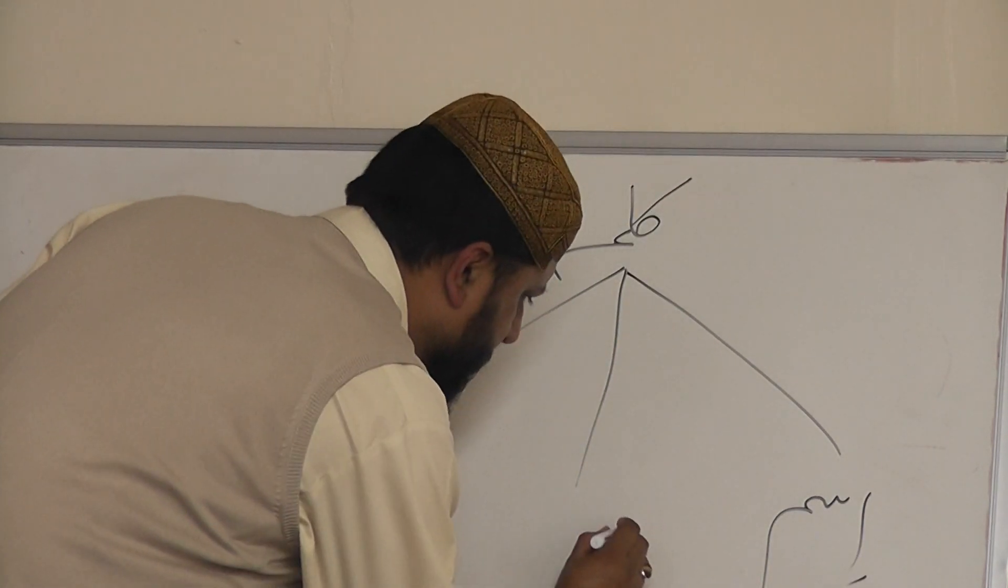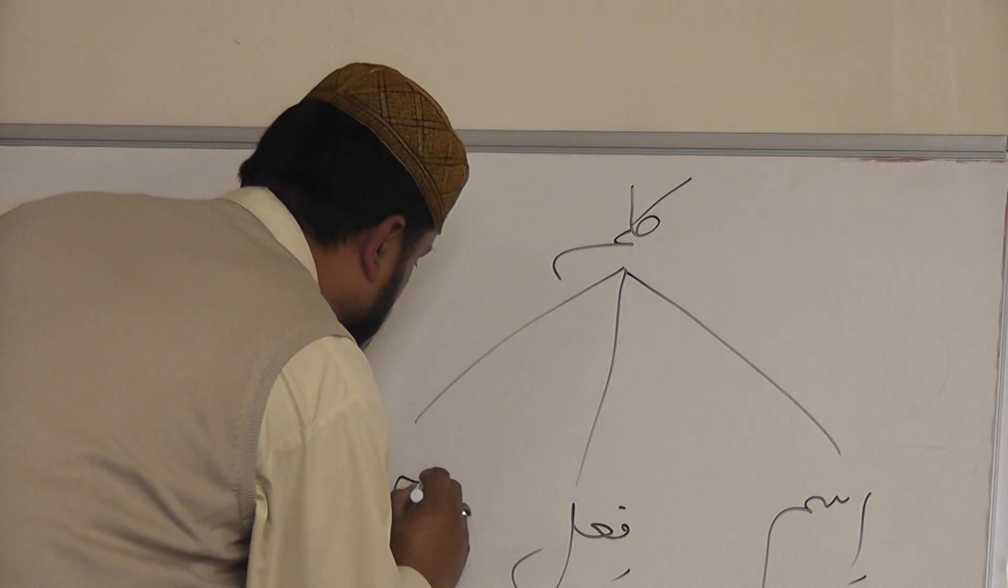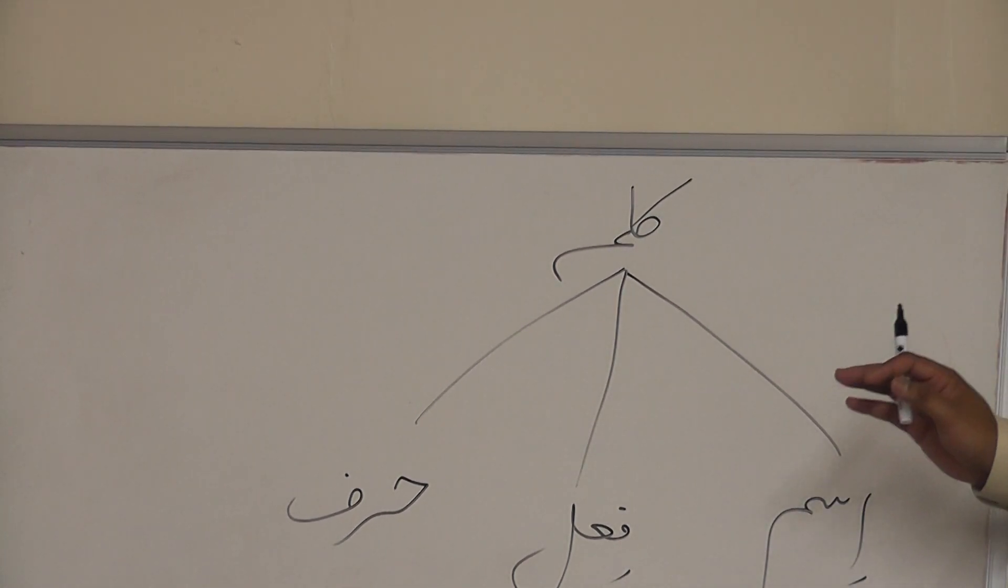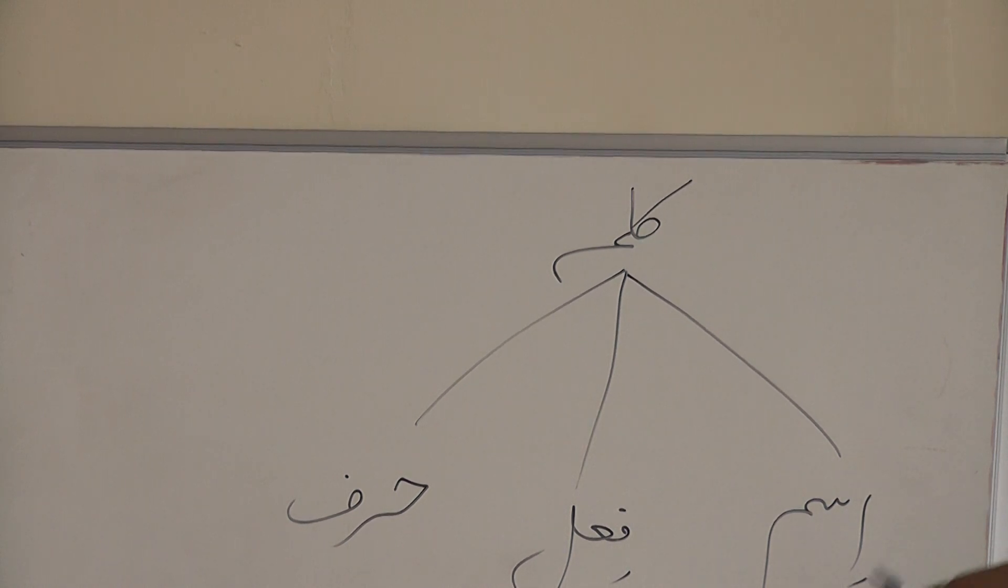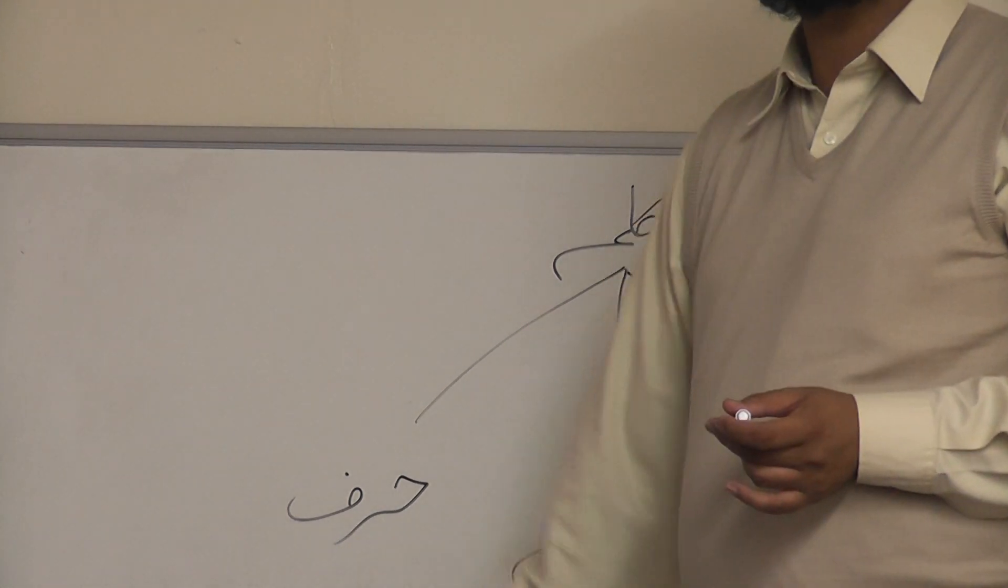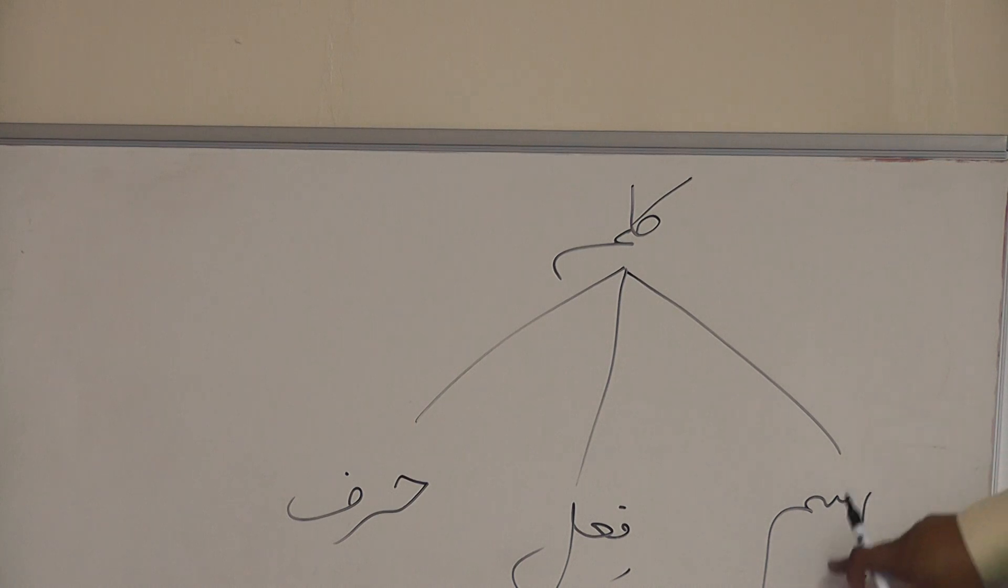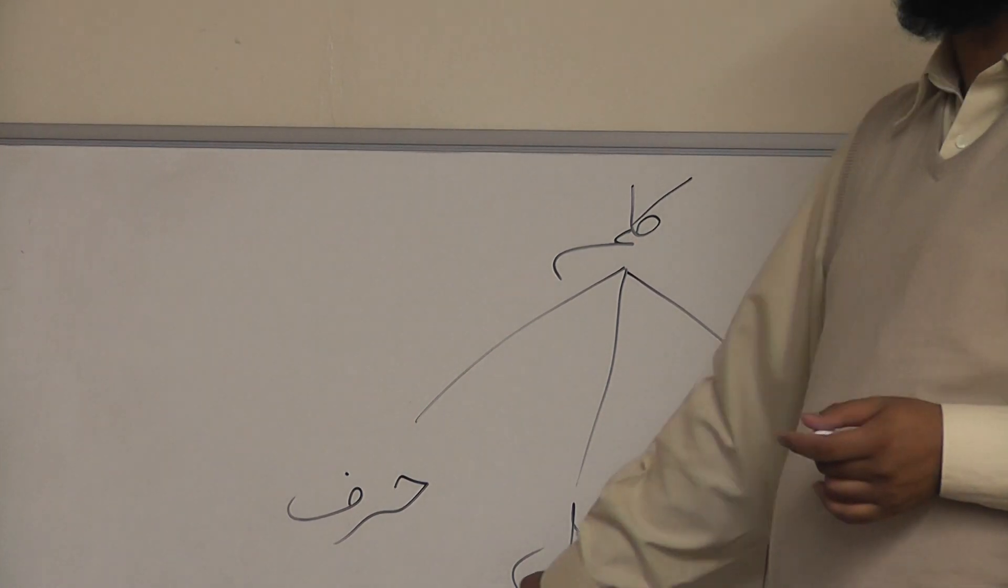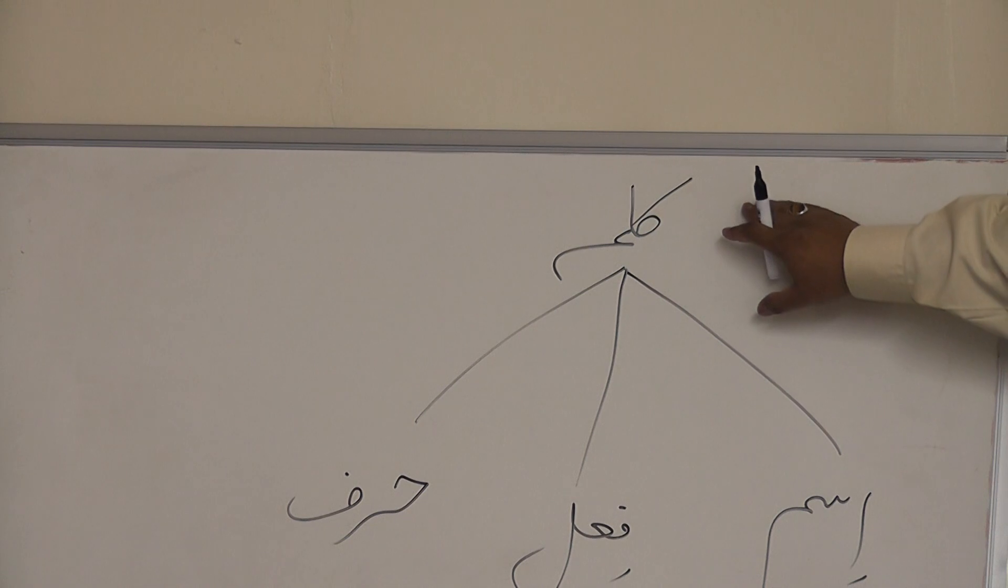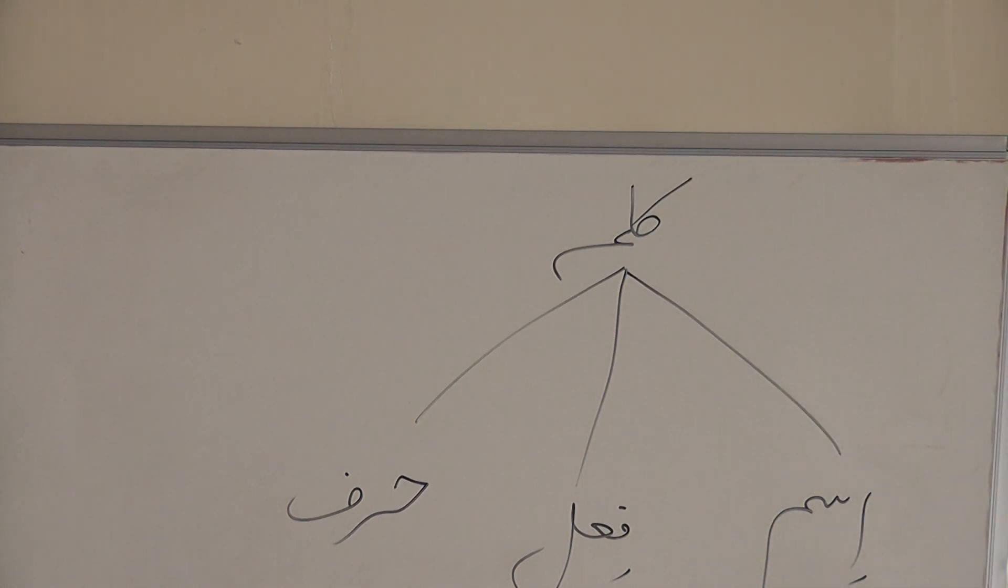Again, there are three types of KALIMAH: ISM, FAIL, and HARF. ISM, FAIL, and HARF—noun, verb, and particle. These are three types of Kalima or meaningful word or MAUDU. So what does noun mean? Now we will learn the definitions of ISM, FAIL, and HARF.